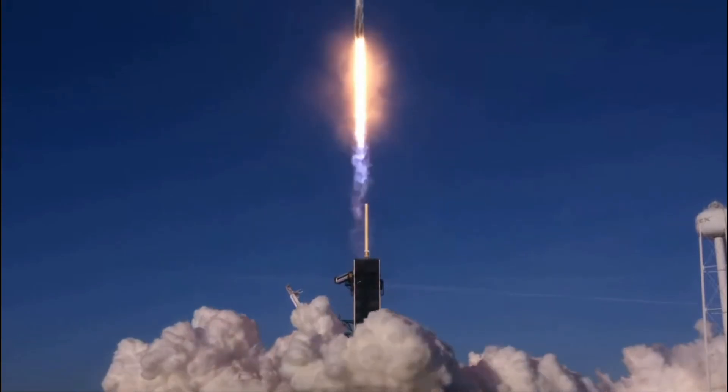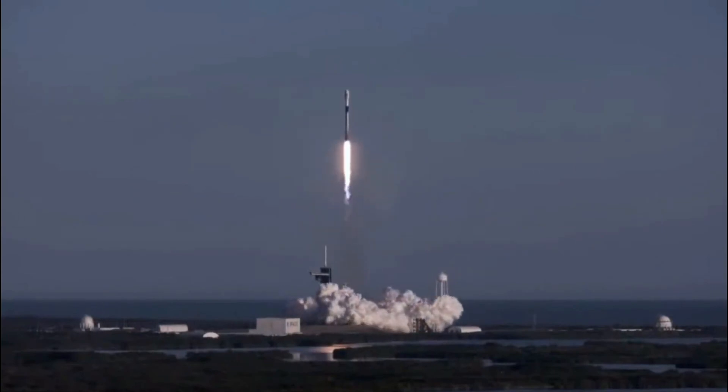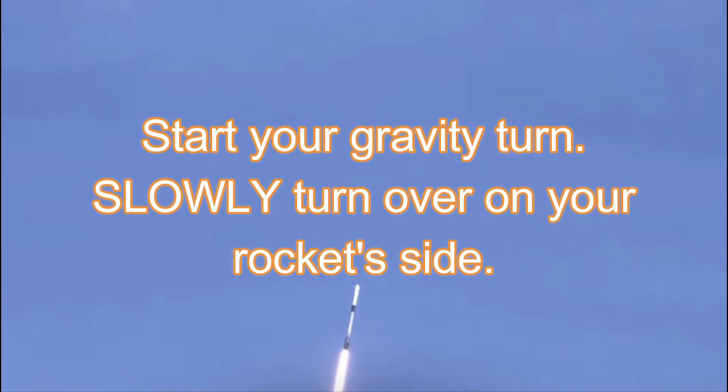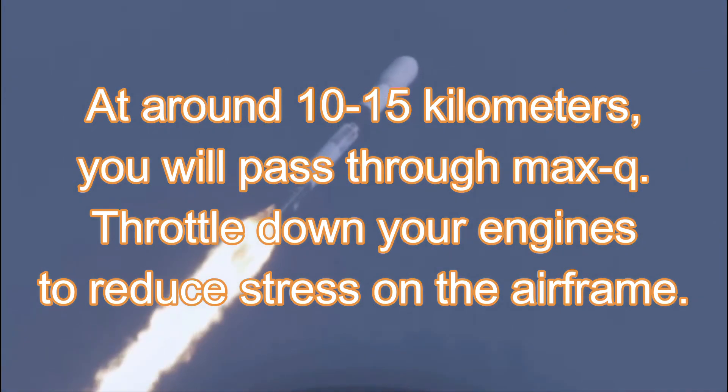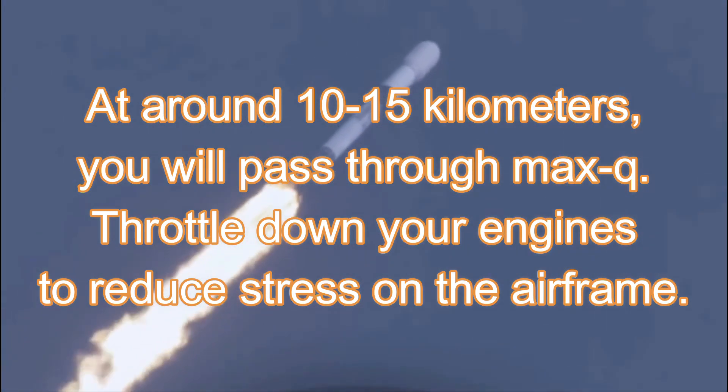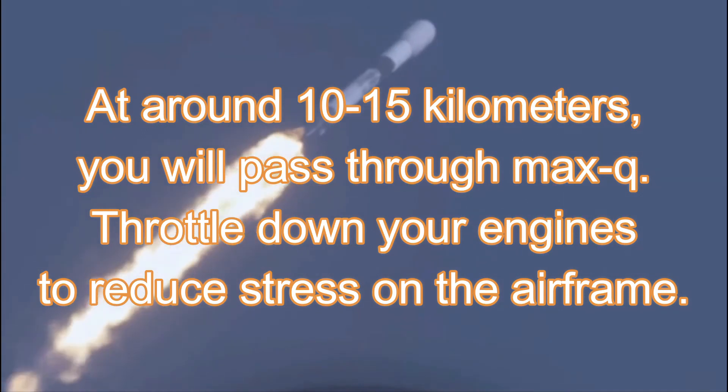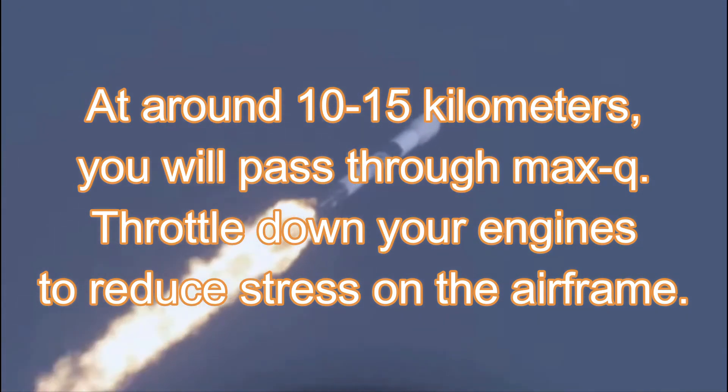Ok, so after all of that information, we can finally fly our rocket into orbit. First, fire your rocket and fly vertically upwards for a few kilometers. Now we are going to start a gravity turn — this is where you slowly turn over on your rocket's side. Since the lower parts of the atmosphere are the thickest, you want to be going mostly vertical so you can fly through them faster. But to reach orbit, you need to be going really fast on your side, so as the atmosphere gets thinner, you want it to slowly turn over. At around 10–15km, you should pass through a point known as Max-Q. This is where you experience the maximum amount of drag during your entire flight, and you should throttle down your engines during Max-Q to reduce stress on the airframe.